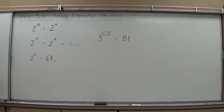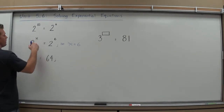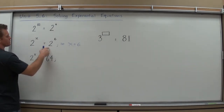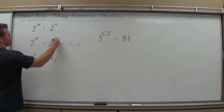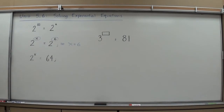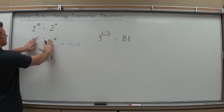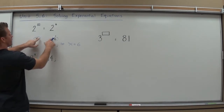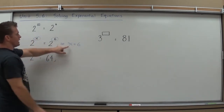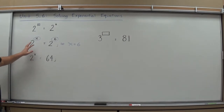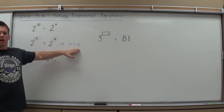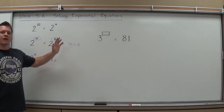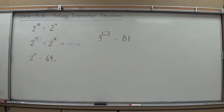That is the actual process we're going to use to solve exponential equations. If we can make the bases the same, then we can ignore them — they don't affect the problem. I just need the exponents to become equal so I can set them equal to each other. Easier examples give you the answer right away; more complicated ones require additional solving after that.